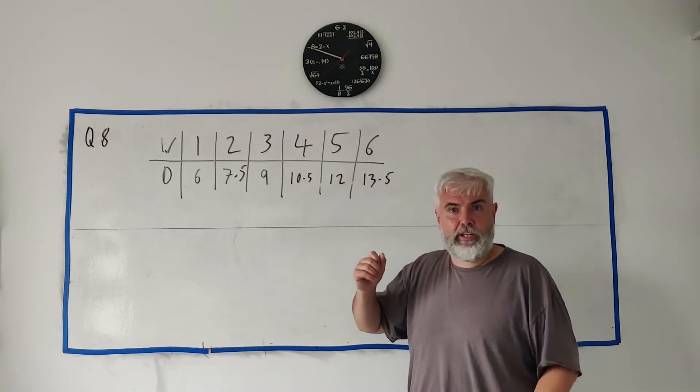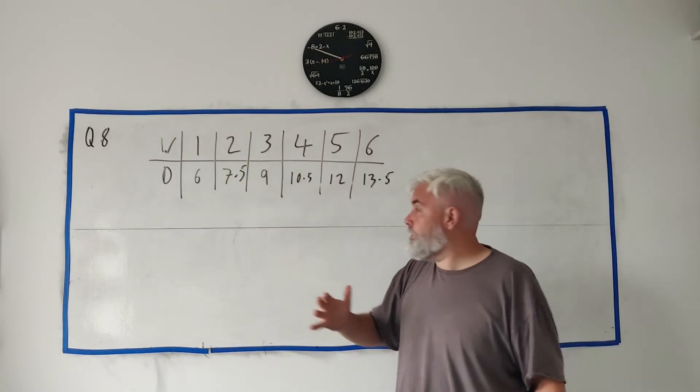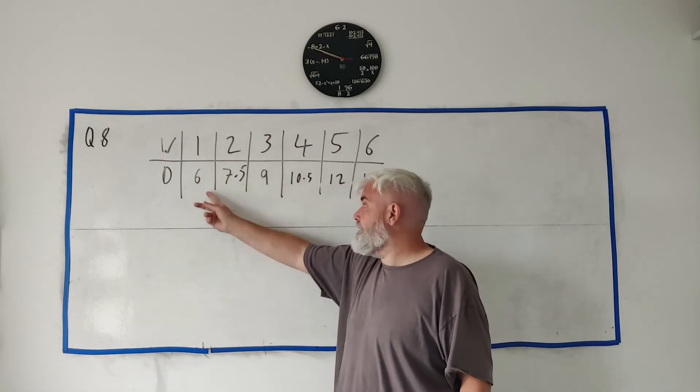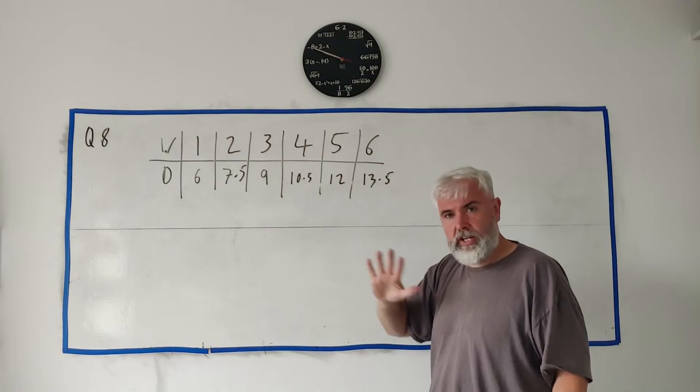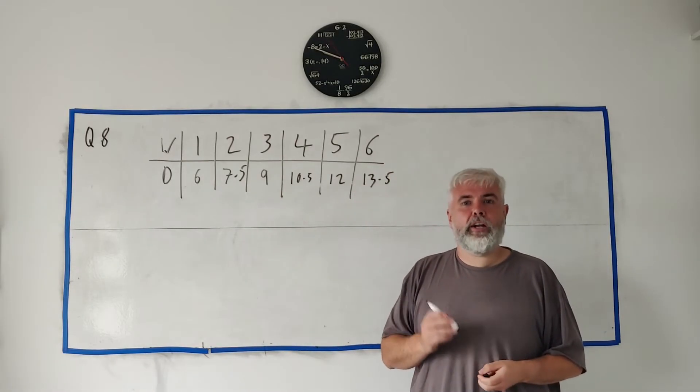Now they don't say anything about it yet, but you should hopefully be seeing a pattern here. This is an arithmetic sequence. The starting point is 6 and the common difference is 1.5. That might help, it will help later in the question.